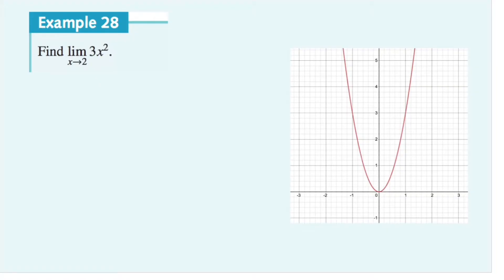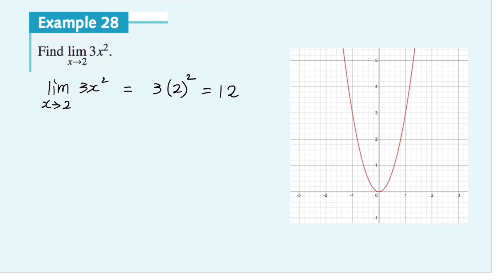In this question, we want to find what's the limit of function 3x squared as x approaches 2. To find the limit, we can simply substitute x equals 2 into this function to find the corresponding value. So we know that the limit as x approaches 2 is equal to 3 times 2 squared, and that's simply 3 times 4, which is 12. So we say that as x gets closer and closer to 2, the value of 3x squared gets closer and closer to 12.